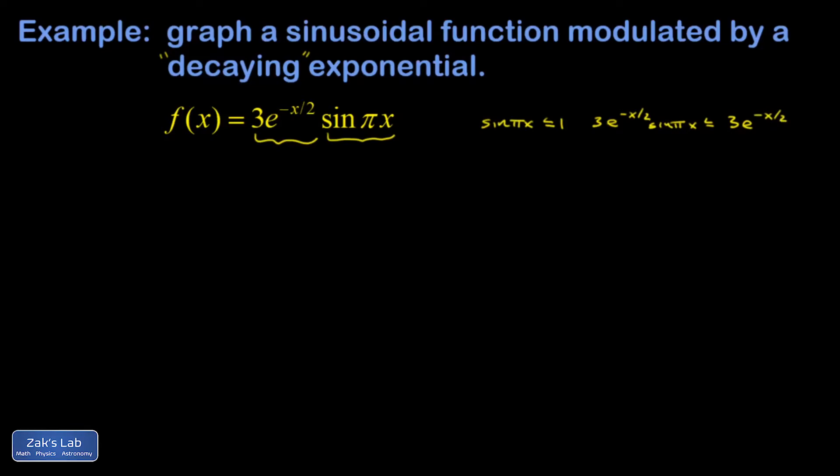In other words, this new function, 3e to the negative x over 2, forms an upper bound on the function that I'm trying to graph. And when the sine function is equal to 1, those are the moments where this function f of x is going to touch this upper bound. And this upper bound is a simple decaying exponential. It's been stretched by a factor of 3, so it has a y-intercept of 3, and it decays slower than my normal simple exponential e to the negative x.